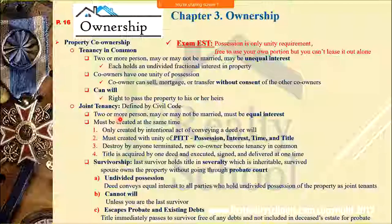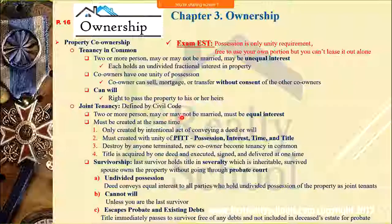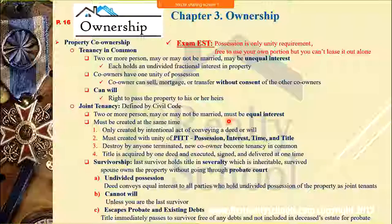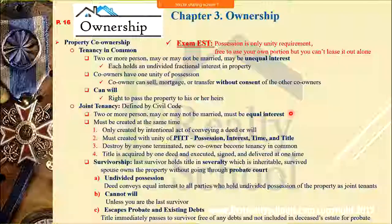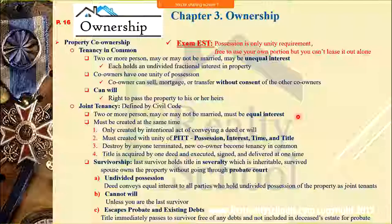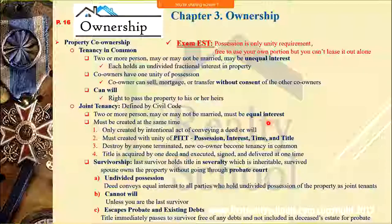Joint tenancy is for two or more persons — they can be a married couple — and each owner holds equal interest. You cannot define a percentage; it's just equal. Every owner has the same right, the whole right, the same right on this property.